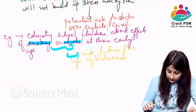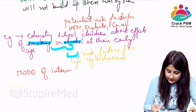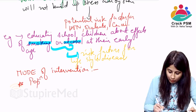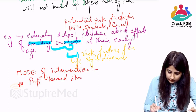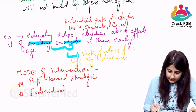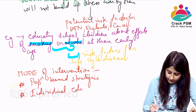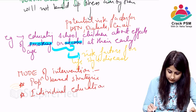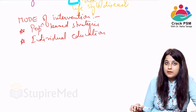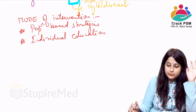The mode of intervention for primordial prevention is population-based strategies or individual education. In the natural history of disease, primordial prevention is applied at the susceptible stage.